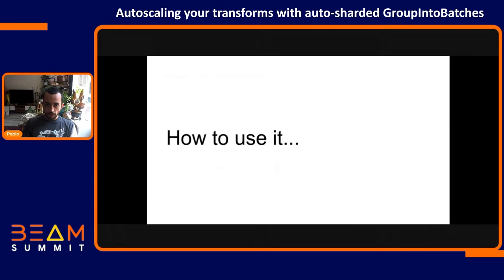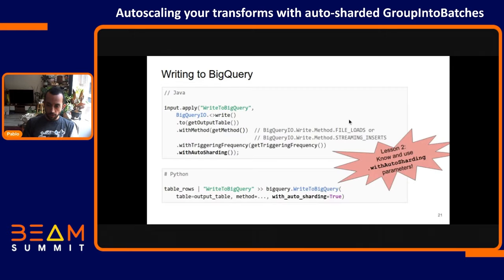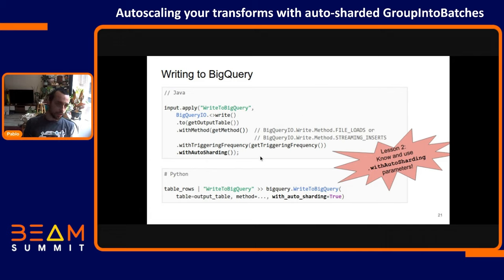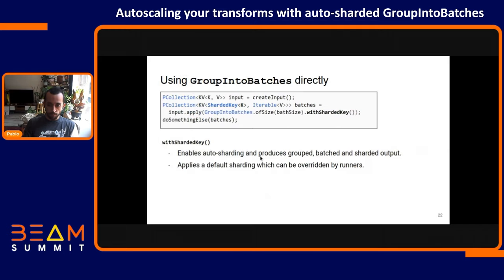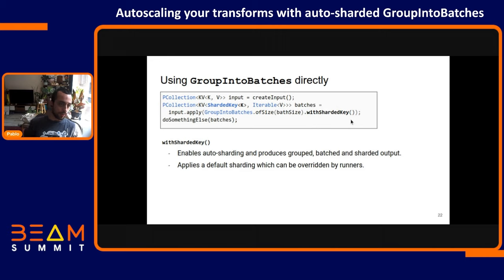How do we use this? For Write to BigQuery, there's a parameter WithAutoSharding. This will use streaming inserts and automatically increase or decrease the number of shards according to the number of workers, helping your pipeline scale better. If you're writing your own transform and want to write to an external system or batch your data in a way that scales with the number of workers, you can use the Group into Batches transform with the WithShardedKey parameter, which gives you a dynamic number of shards per key depending on the number of workers.